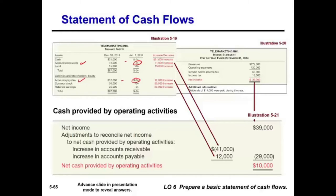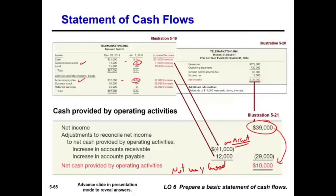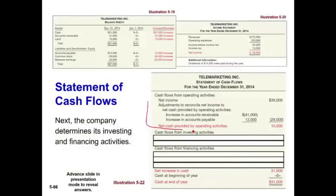So the operating section: net income $39,000, minus increase in accounts receivable ($41,000), plus increase in accounts payable $12,000 — net cash provided from operations is $10,000. This is not very strong, but it's the first year. Most of the sales were on account and not yet collected, indicating the company is having difficulty collecting cash. This is what the operating section tells us.